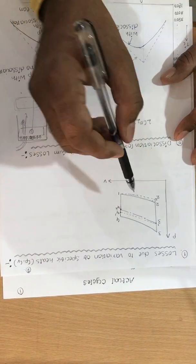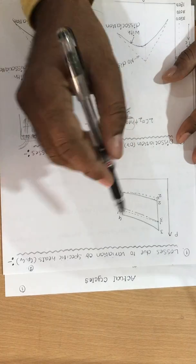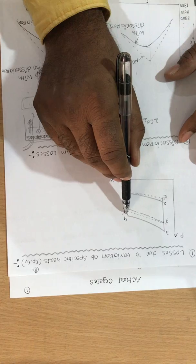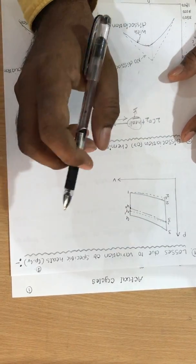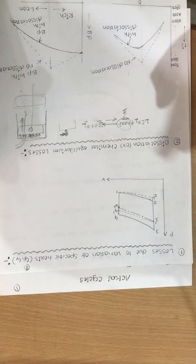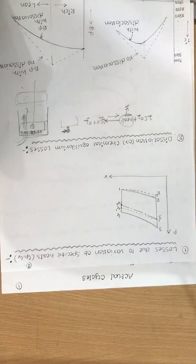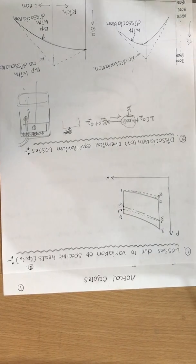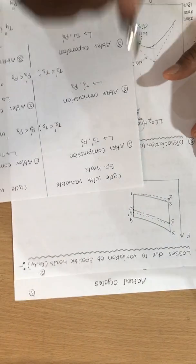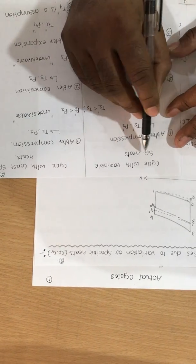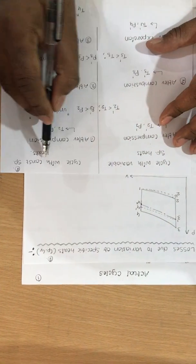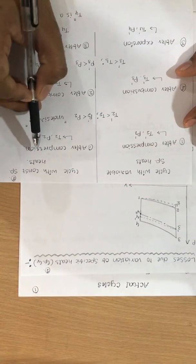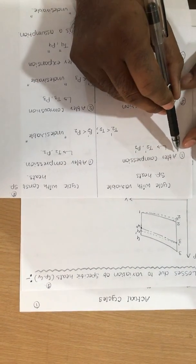With change in specific heats, the diagram shifts to points 1-2-2'-3'-4'-1. So we compare two cases: the left side with variable specific heats, and the right side with constant specific heats. Let me discuss in detail how the variation of specific heats changes the efficiency.